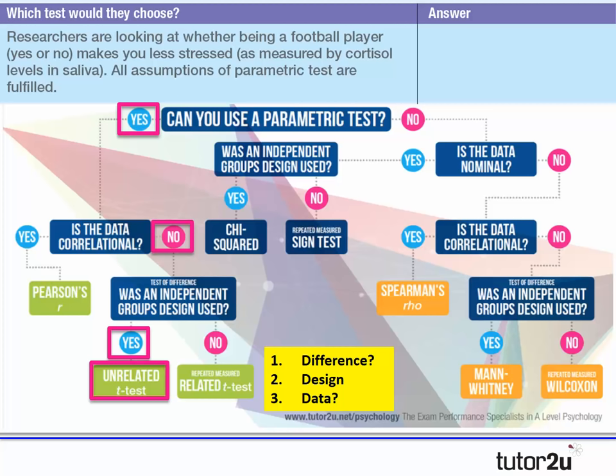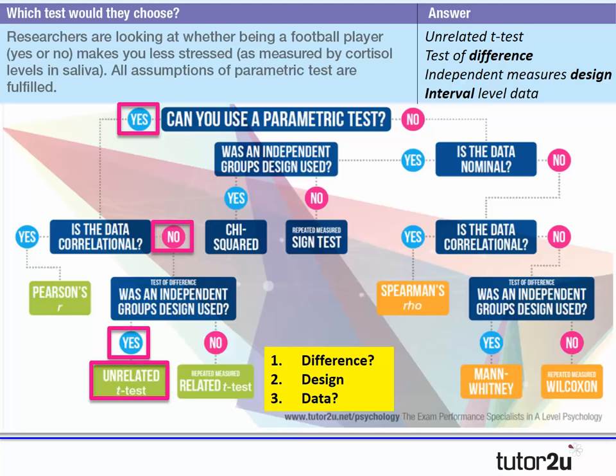Thinking about the three Ds — difference, design, and data — to get the four marks: one mark for naming the unrelated t-test; one mark for saying it's a test of difference, not correlational; one mark for identifying the independent measures design; and one mark for stating it's an interval level of data, because for a parametric test it must be at least interval level of measurement. The decision tree enables students to get four out of four, as it provides the answer to each of the three Ds.